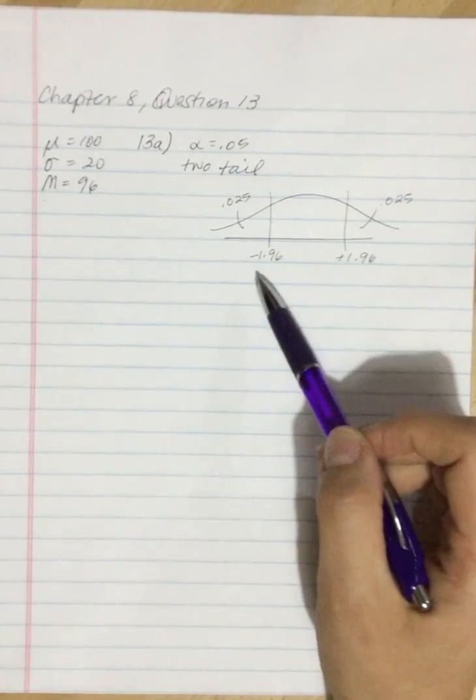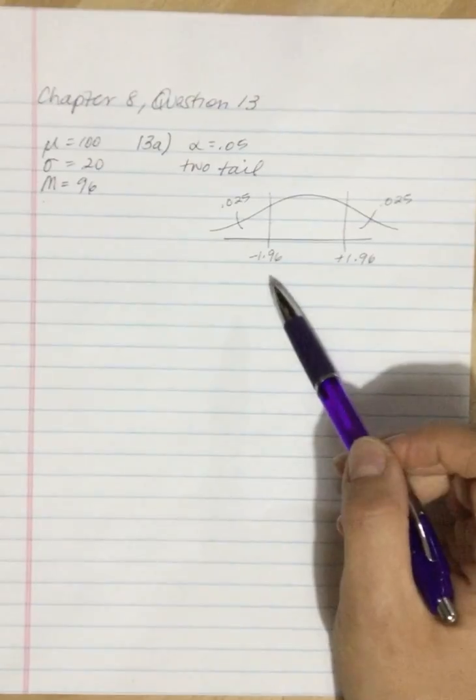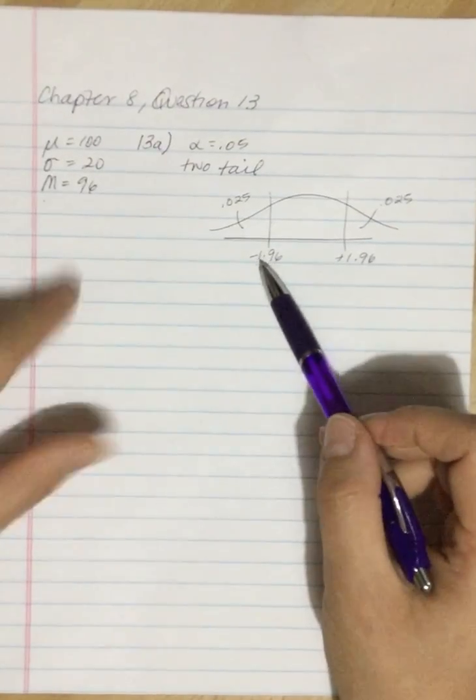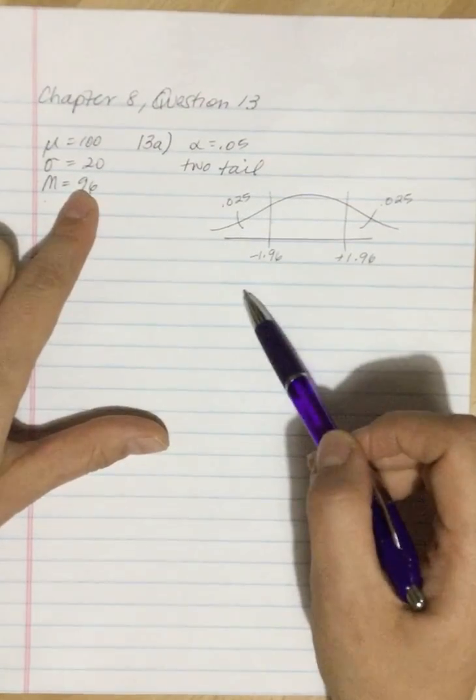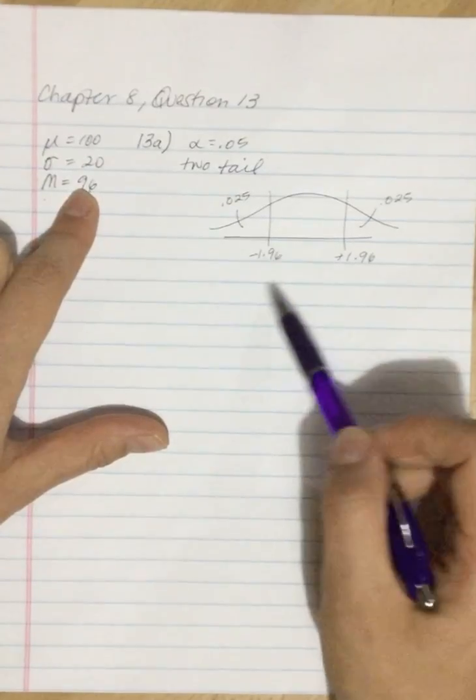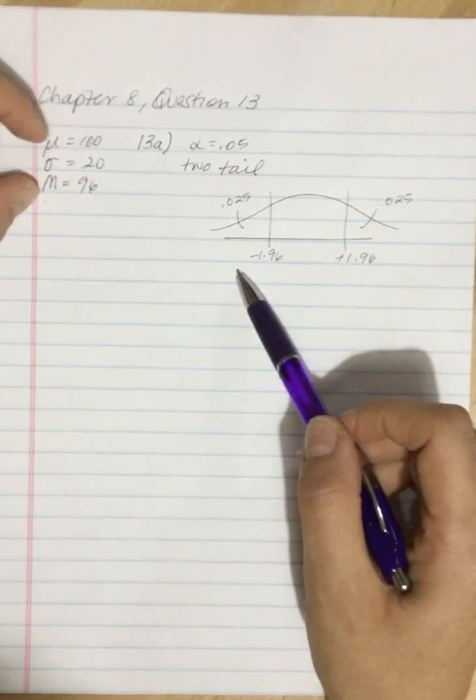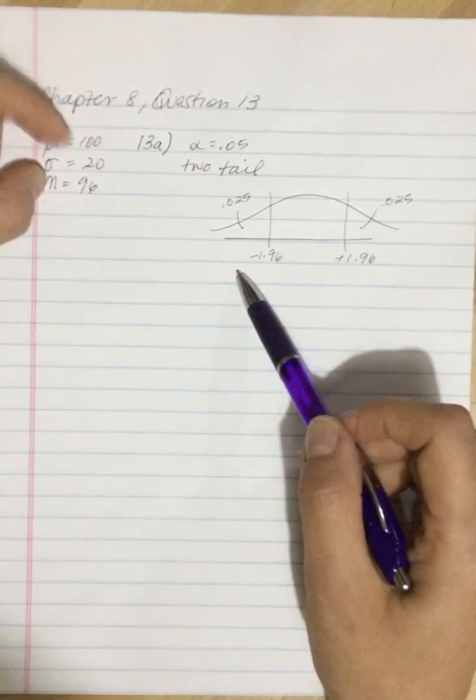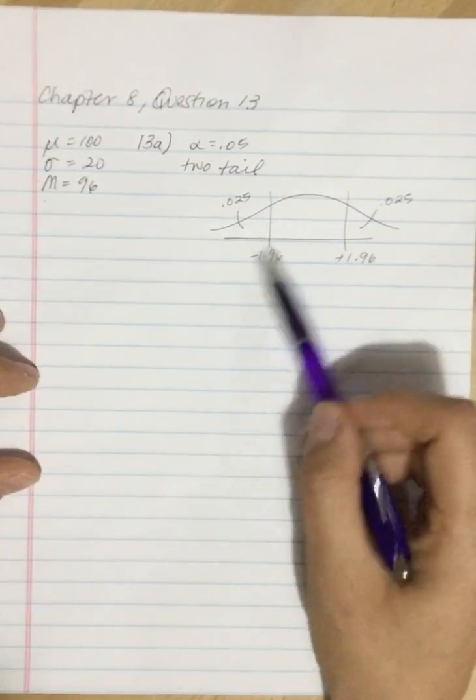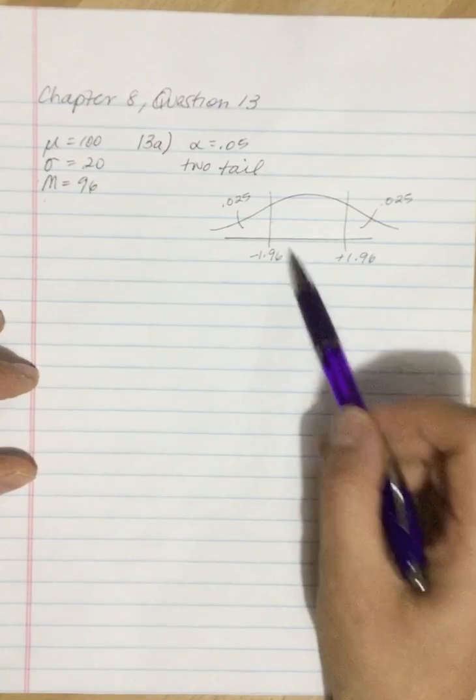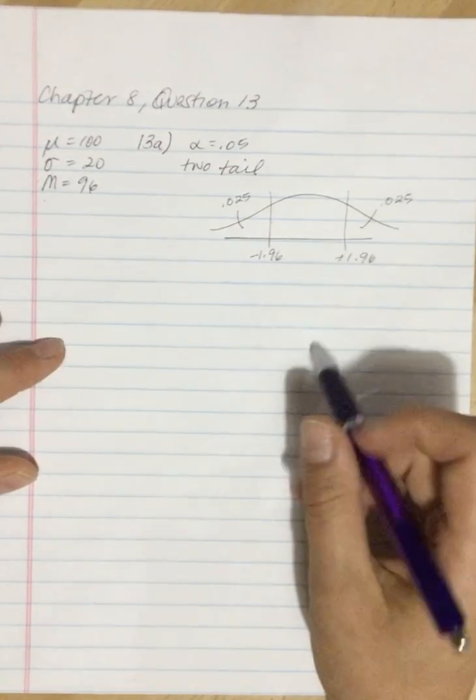So that's the minimum that we're going to be able to find. At a minimum, we need a Z-score of negative 1.96. And it's going to be negative because the difference between the mean and the population value - the mean is smaller than the population value. So we do expect a negative Z-score if it's going to be significant.